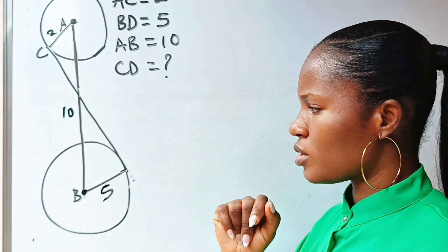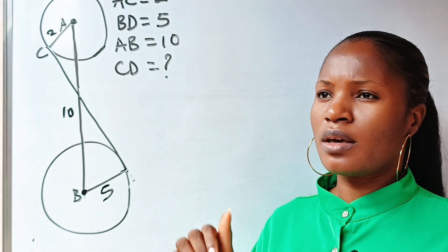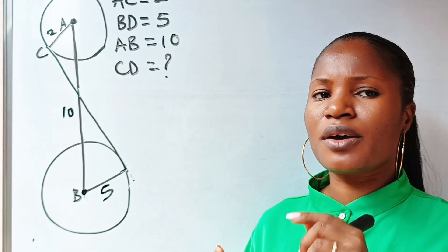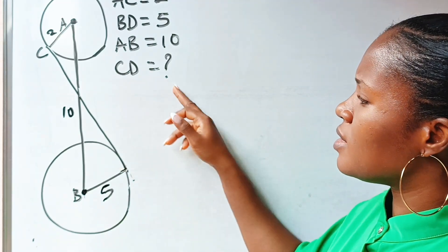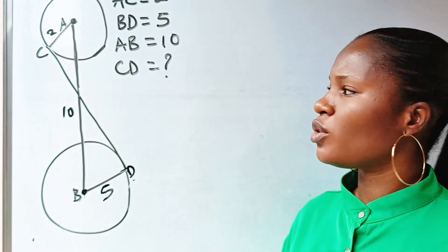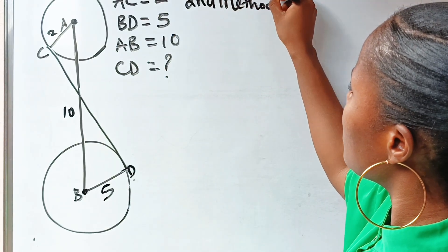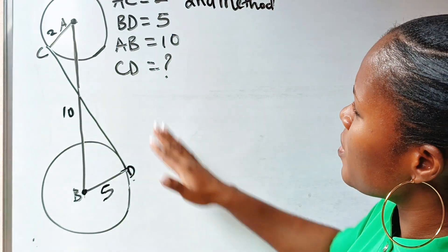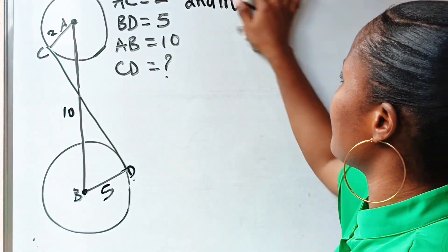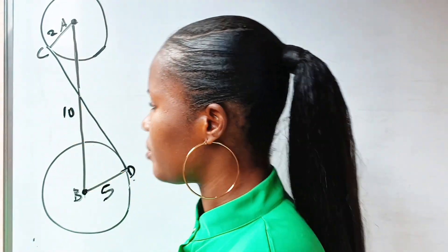Let's solve this using the second method. Welcome back to my channel. We have already solved this using a method — I posted it earlier, so you can check that to see the method I used to get the value of CD. Now let us use another method — the second method. I'm going to need to clean this board to maximize my space.